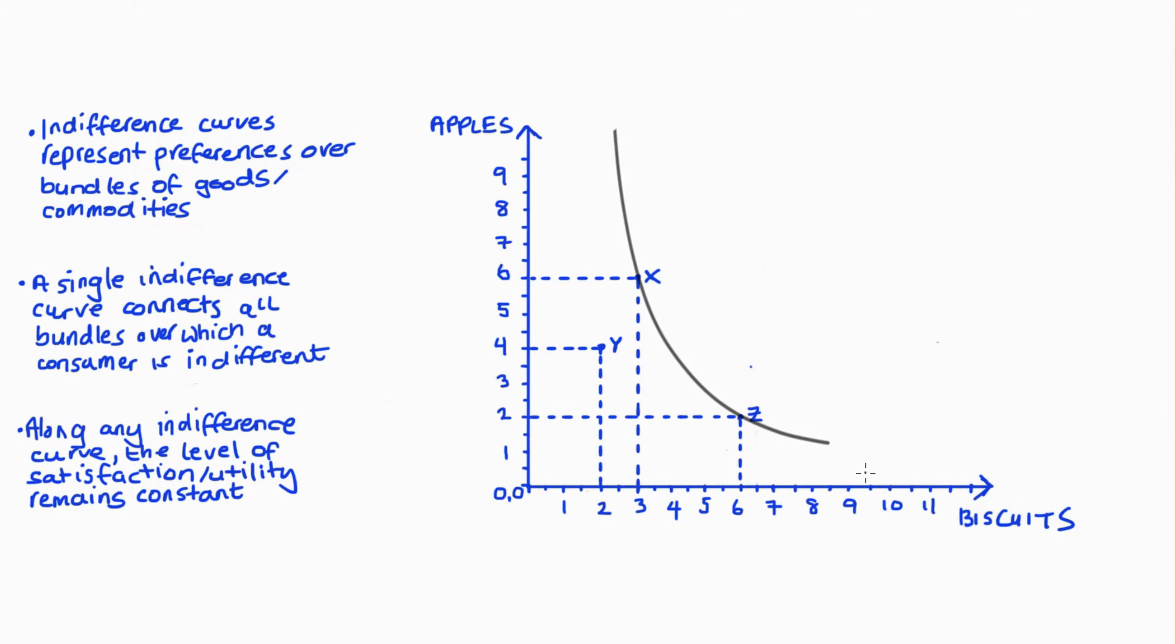And such a curve would maybe look something like this. What the indifference curve does is connect all of the bundles over which I'm indifferent. And so we're indifferent not just between X and Z, but between any other bundle that this line passes through. And that's what indifference curves do. That's what they identify. Bundles of consumption over which I or a consumer is indifferent.